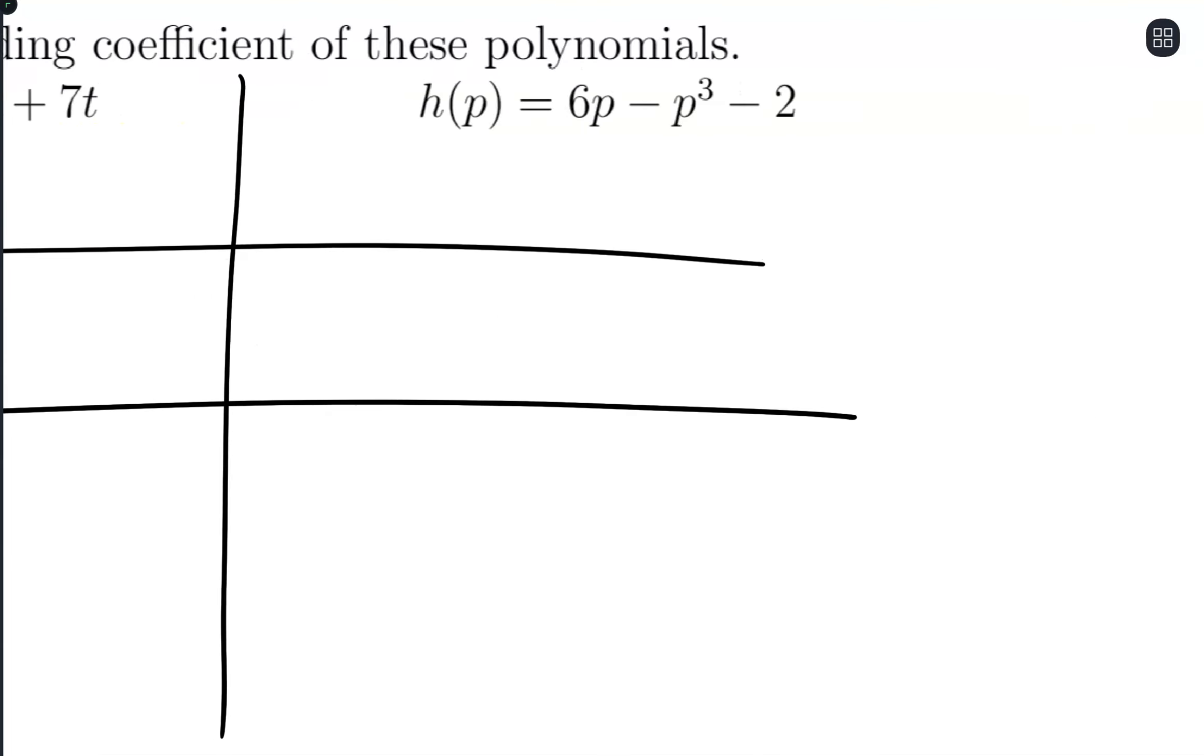And then this last one: 6p minus p cubed minus 2. To get the degree, I'm looking for the largest exponent, which is at this negative p cubed. So this is a degree 3 polynomial.